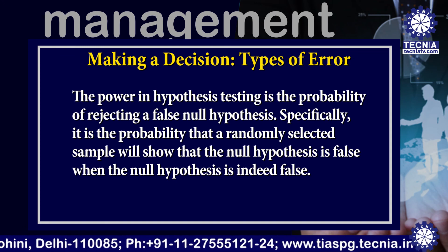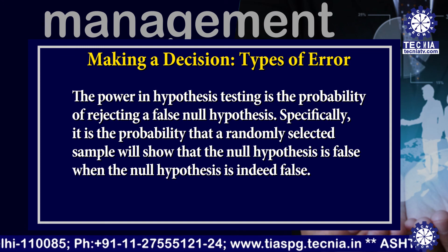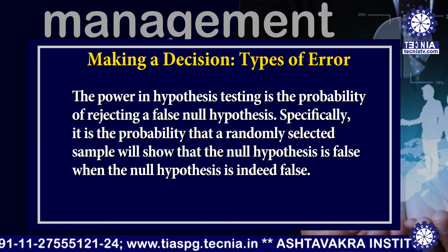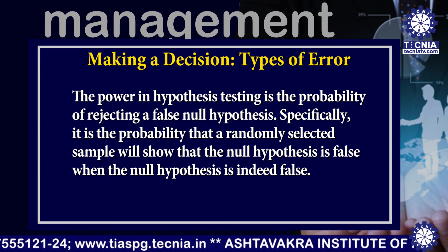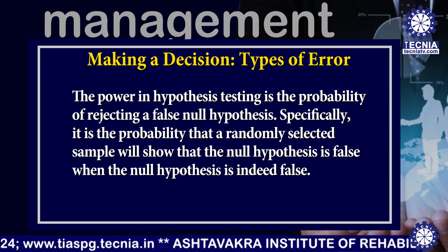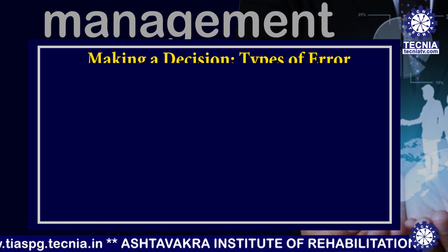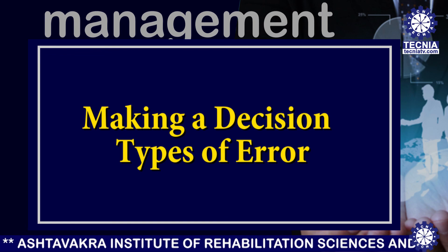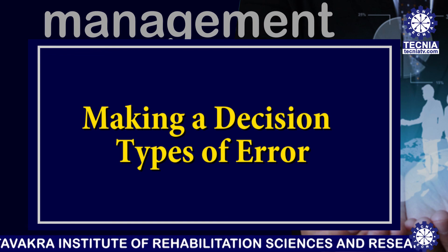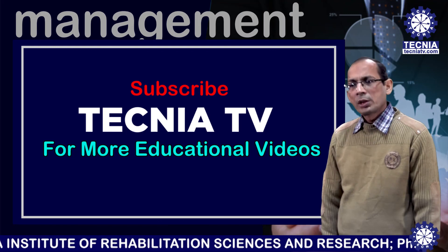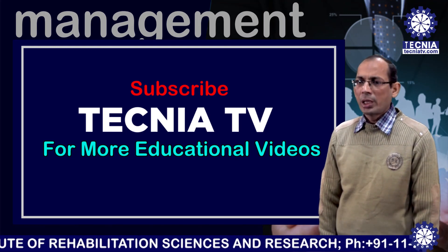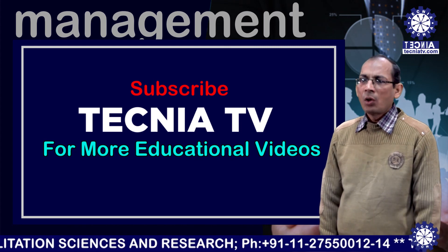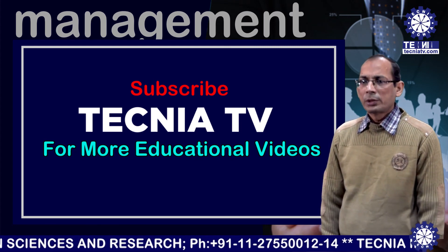The power in hypothesis testing is the probability of rejecting a false null hypothesis. Specifically, it is the probability that a randomly selected sample will show that the null hypothesis is false when the null hypothesis is indeed false. This is the completion of my lecture on types of errors in hypothesis testing. Hope you will find it beneficial. Watch Technia TV for more lectures on research methodology. Thanks a lot. Bye.